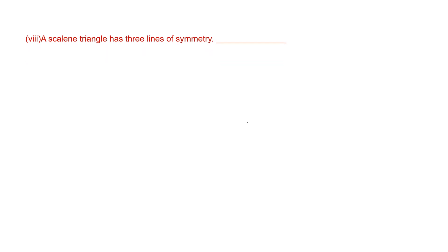Question 8: a scalene triangle has three lines of symmetry. A scalene triangle is a triangle which has all three sides of different lengths, so it will not have a single line of symmetry. Therefore, this statement is false.